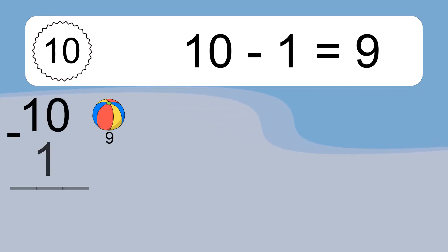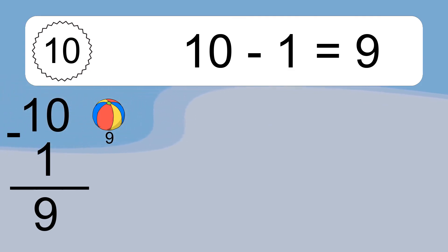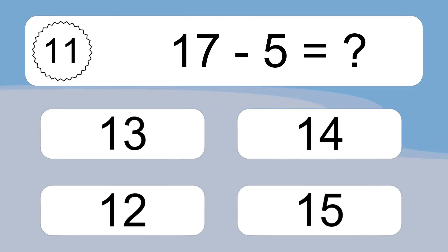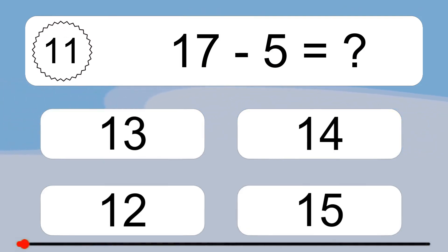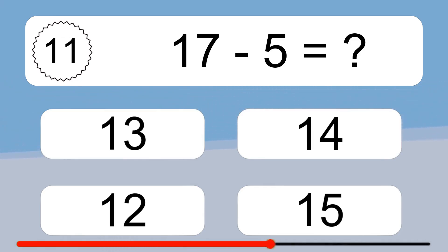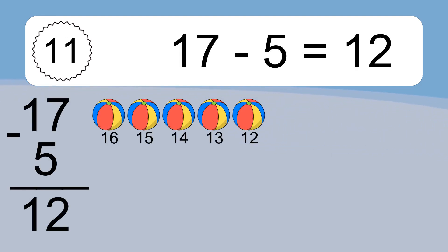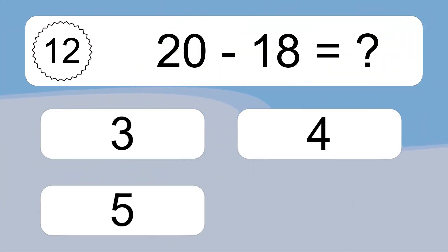10 minus 1 equals 9. Let's count it: 9. 17 minus 5 equals what? 17 minus 5 equals 12. Let's count it: 16, 15, 14, 13, 12. 20 minus 18 equals what?